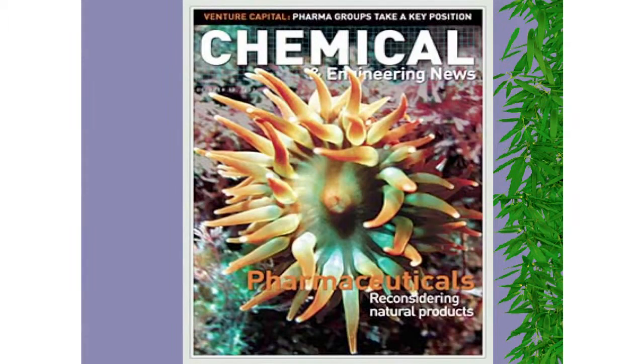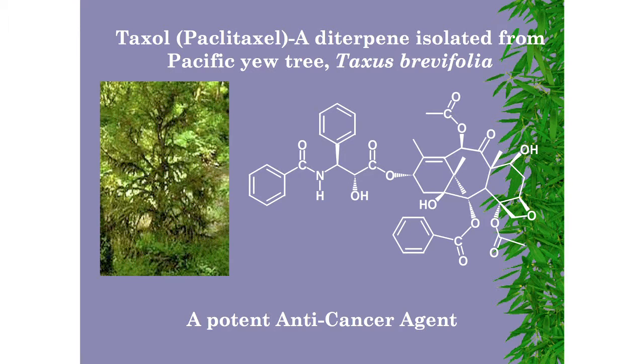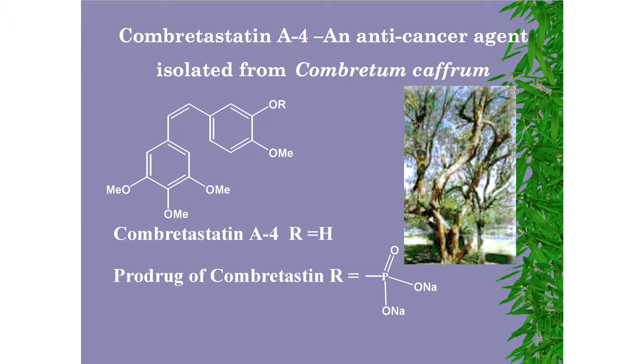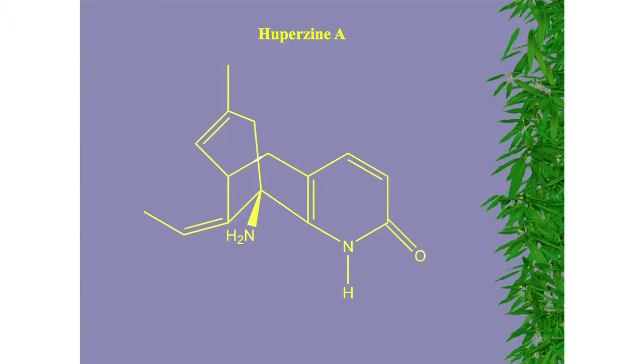You can see how important natural products are for drug discovery programs. A couple of years ago, the front page of the American Chemical Society's Chemical & Engineering News reported that pharmaceutical industries are coming back to natural product chemistry, because previously they were relying too much on synthetic organic chemistry. For example, Taxol — isolated from Taxus brevifolia in California — and Combretastatin, another anti-cancer compound isolated from Combretum caffrum collected from South Africa. And Huperzine, a compound used to treat Alzheimer's disease.